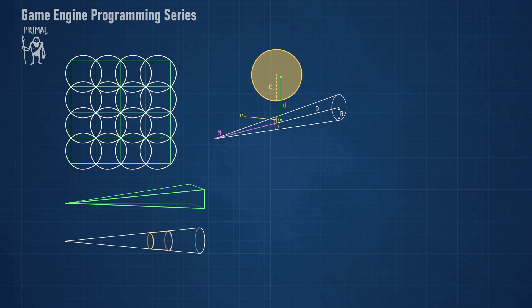We say that the sphere intersects the cone if the distance d is less than the sum of the sphere's radius and the cone radius at the projection point.